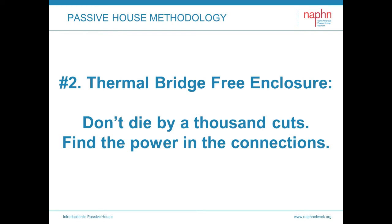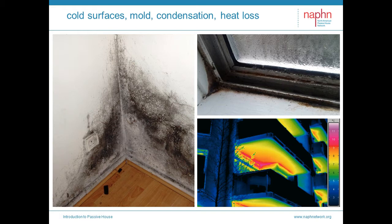Principle two extends this thinking to make sure that we don't have breaks in the insulation. In typical construction, these breaks in insulation — these thermal bridges — may not seem important in isolation, but they can be completely undermining to the building's performance. If we think of a thermal bridge as a cut, your project can easily die from a thousand thermal bridge cuts if you're not very careful. The thermal image on the lower right shows the common balcony connection, turning the building into a radiator to the world. A thousand cuts.